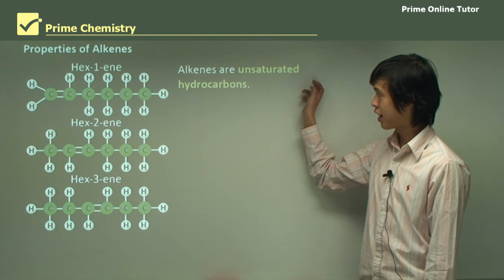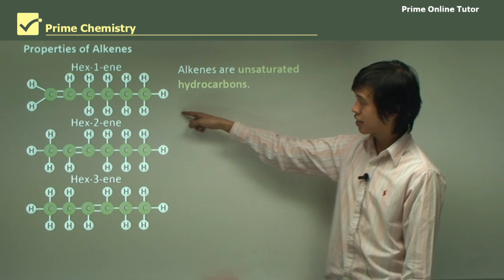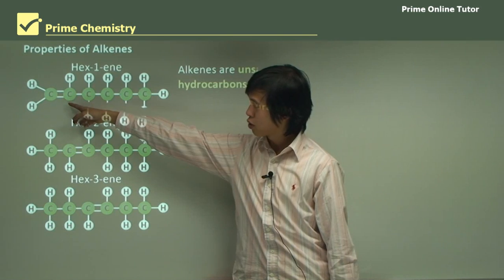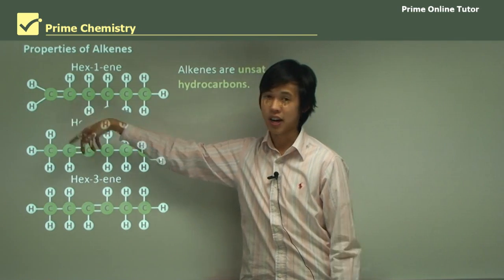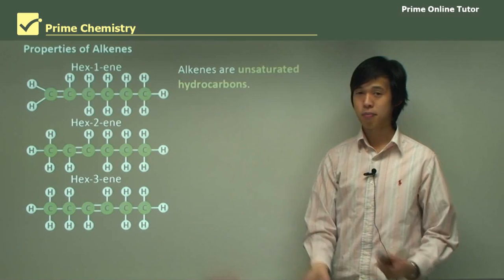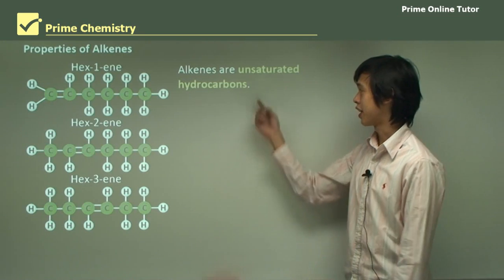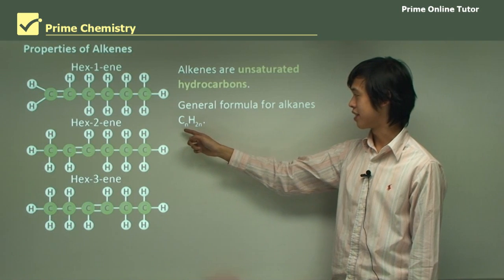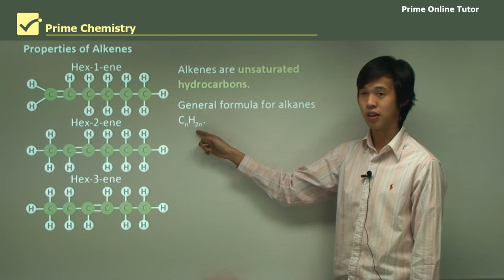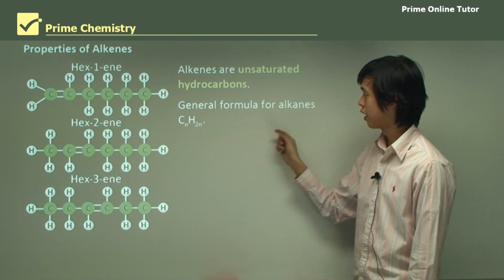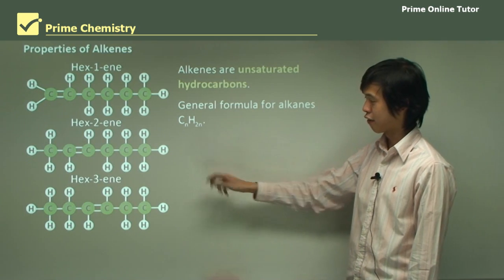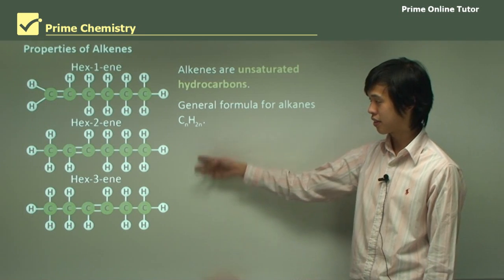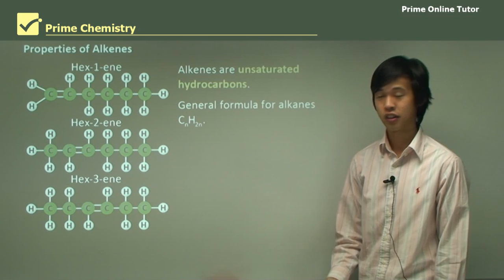Alkenes are unsaturated hydrocarbons. That double bond means that two extra hydrogens that could have connected to these carbons are no longer available. There isn't the maximum number of hydrogen, so they're called unsaturated. The general formula for alkenes is CnH2n. That just means that for every carbon, there are 2 times as many hydrogen. We can check that with these ones, and I'll leave that for you to do as an exercise.